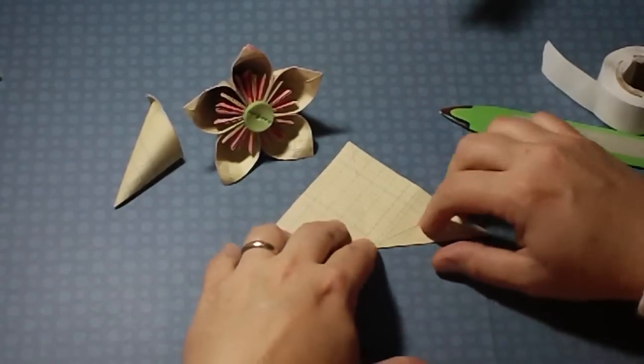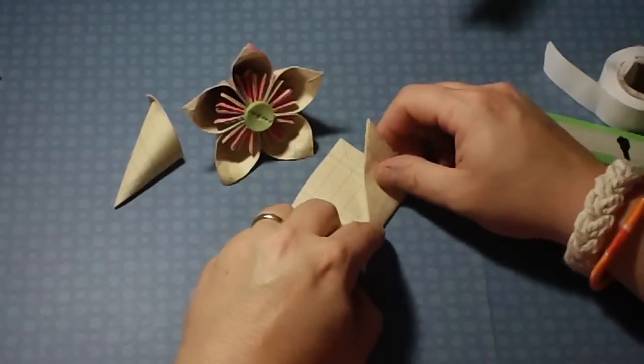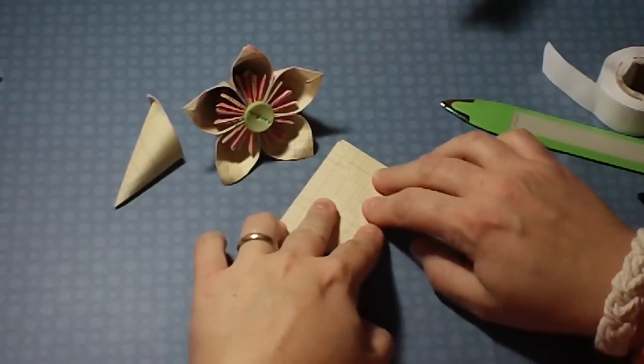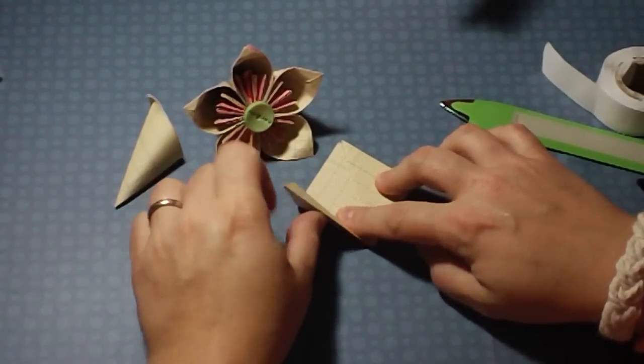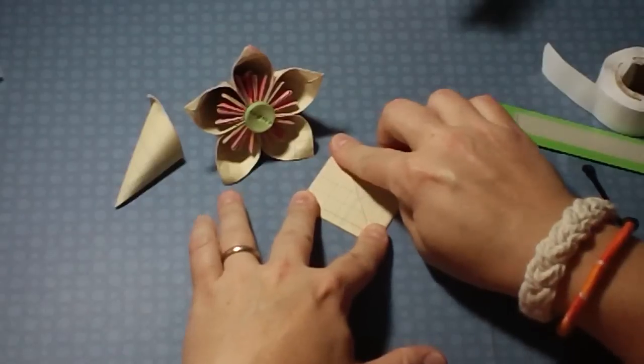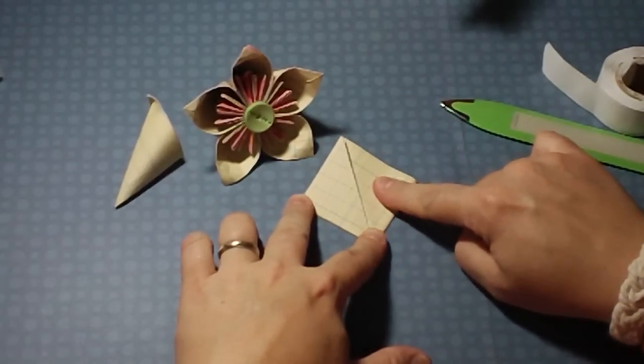So now that we have our triangle, I'm going to take the end and fold it up to the midline so that the points are touching, and the same thing on the other side. With origami you're always repeating your folds. Now we have this square.